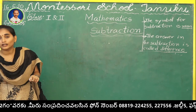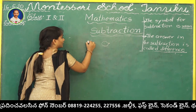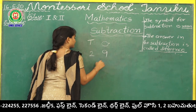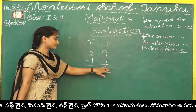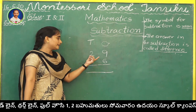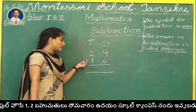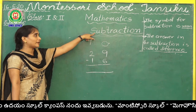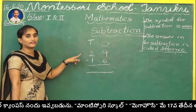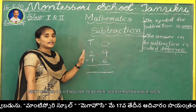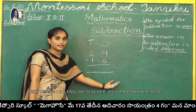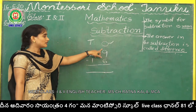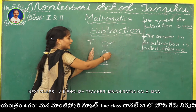Now let us see some 2-digit subtractions. Ones place and tens place — so it will have 2 digits. Read the question first, children: 29 minus 16. Here the symbol is minus, so what you have to do? Subtraction. Look at the symbol first when the question is given. In subtraction also, you have to start from ones place only. What are the numbers under ones place? 9 and 6.